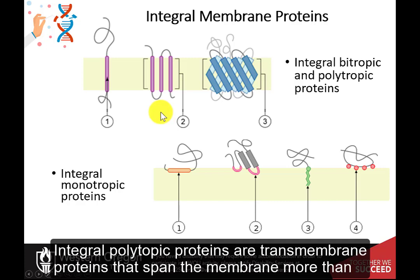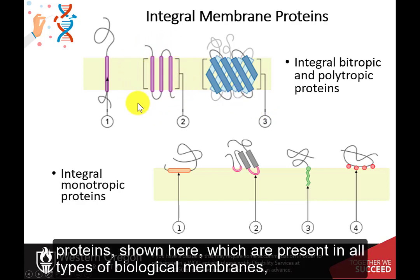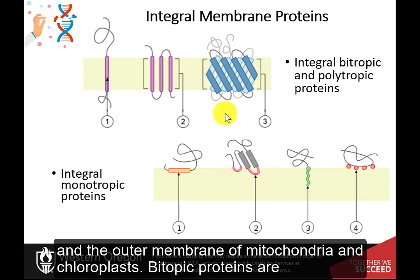Integral polytopic proteins are transmembrane proteins that span the membrane more than once. These proteins have one of two structural architectures: the helix bundle proteins, which are present in all types of biological membranes, or beta-barrel proteins, which are only found in the outer membrane of gram-negative bacteria and the outer membrane of mitochondria and chloroplasts.